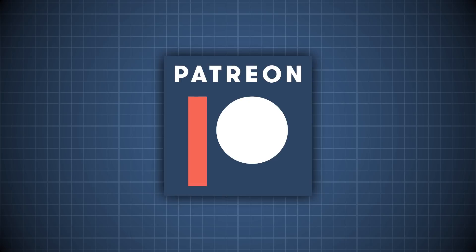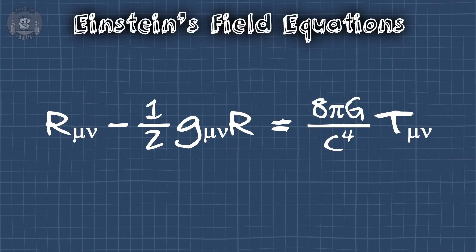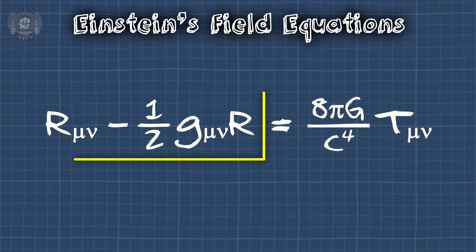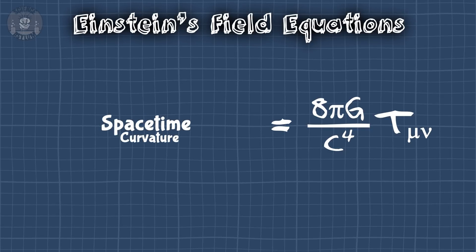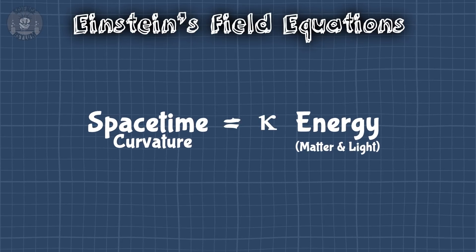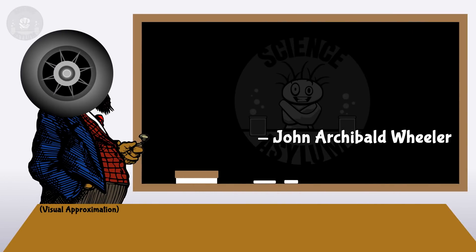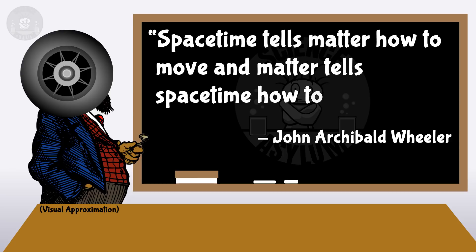This episode was made possible by generous supporters on Patreon. The interaction between space-time and matter is governed by Einstein's equation. It looks something like this, which can be a bit intimidating — okay, it's a lot intimidating. But all this stuff is really just one thing: space-time curvature. This other thing is the energy in that space-time. More energy means more curvature; less energy means less curvature. As John Wheeler once said, space-time tells matter how to move, and matter tells space-time how to curve.